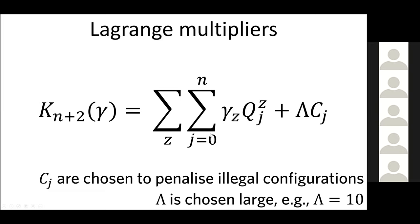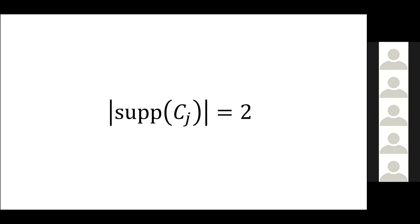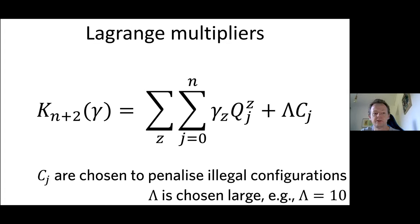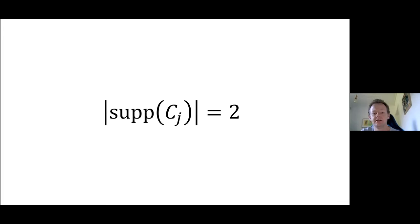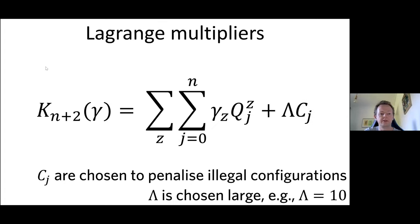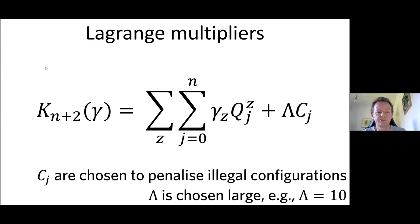These constraint terms C_j that penalize illegal configurations have support two — they act on only pairs of spins. In the end, we have a Hermitian matrix that's local: each term acts on only two or three anyons at a time. On the allowed subspace of H3 fusion paths it acts just as the original matrix, and has a large penalty on the illegal subspace. It acts on a tensor product vector space, making it a perfect object to which we can apply tensor network numerical tools to approximate the ground state and low-lying excited states.